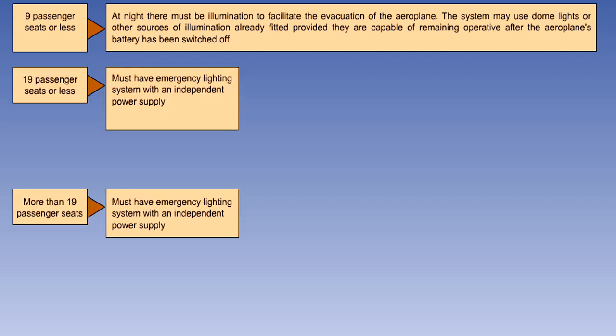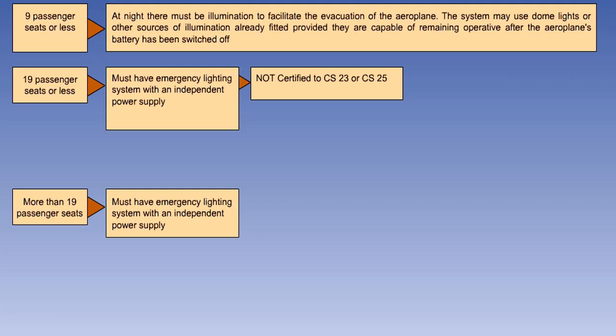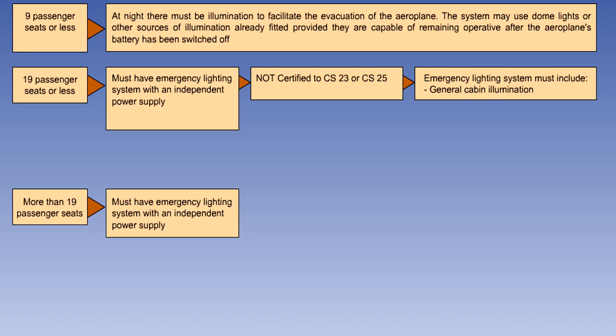All aeroplanes with an approved passenger configuration of more than 9 seats must have an emergency lighting system with an independent power supply. For aeroplanes with an approved passenger configuration of 19 seats or less but more than 9, which are not certified to EASA CS23 or CS25, the independent emergency lighting system must include general cabin illumination.